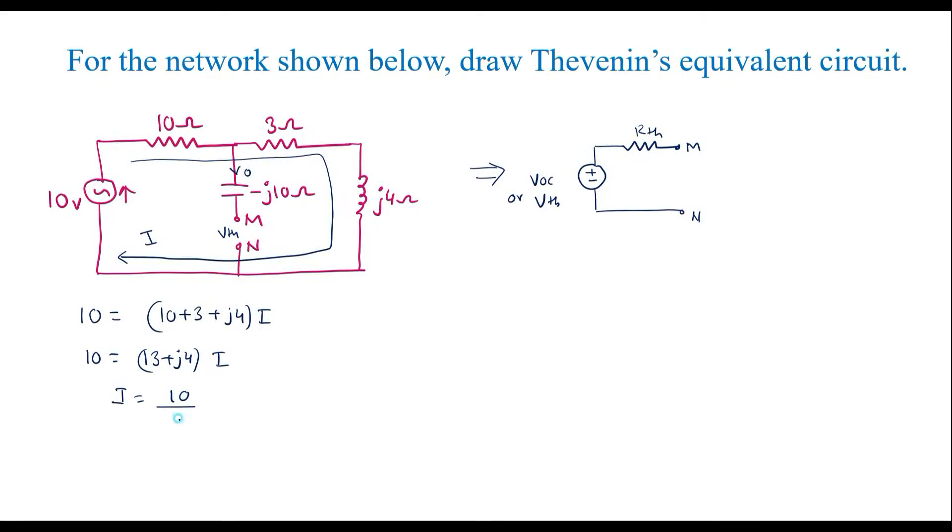Therefore, I is equal to 10 divided by 13 plus J4. Simplifying this, we will get 0.70103 minus J0.216 amps.